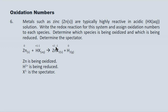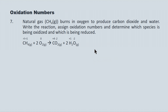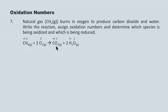Natural gas burns in oxygen to produce carbon dioxide and water. Looking at the oxidation numbers: carbon is going from minus four in CH4 to plus four in CO2 — it's losing a tremendous number of electrons, so it's being oxidized. Oxygen has an oxidation state of zero going in and goes to minus two in the products — it's gaining two electrons per atom, so it's being reduced. The oxygen is the oxidizing agent and the carbon is being oxidized.